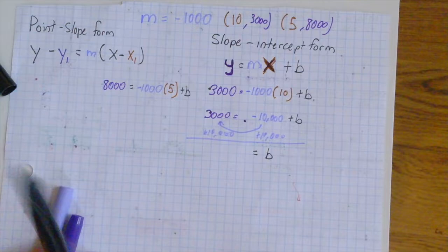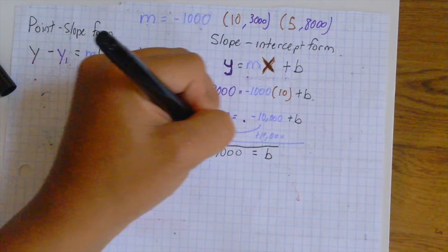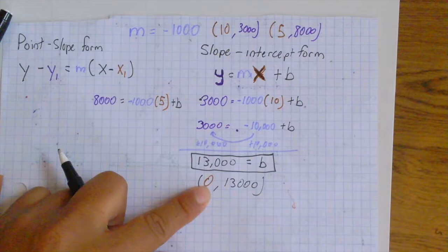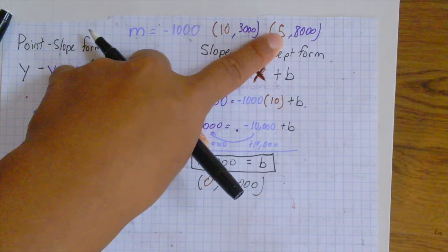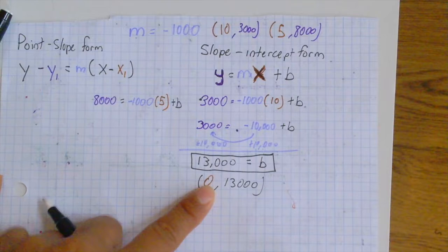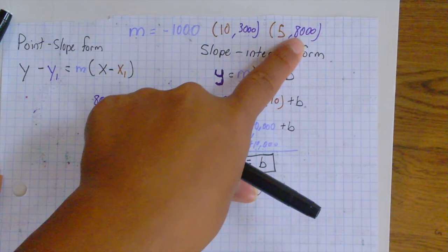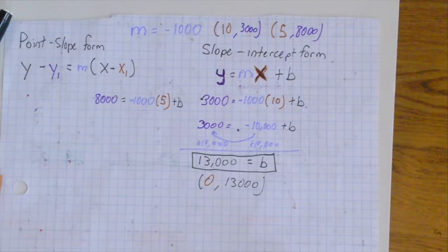Now that we solve for our b value, we can also write it as the point (0, 13,000). Now, another way to solve for this, you could have just noticed that the difference of our x values goes down by 5. So 10 minus 5 is 5, 5 minus 5 is 0. And when that happens, what happens to our y values? They both increase by 5,000. And so 8,000 plus 5,000 is 13,000. Now that we know our slope and our y intercept, we can finalize our function in the slope intercept form.